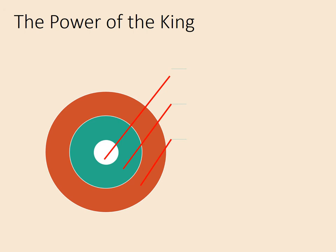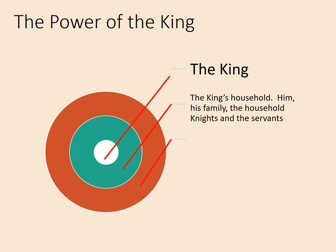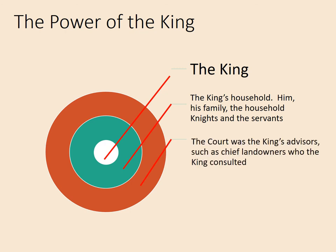The power of the king can be summed up with a diagram of concentric circles showing the influence of power. At the centre we have the king, who has the most power — all other power radiates from him. Then we have the king's household: the king himself, his family, household knights, and servants — the people who knew the king personally best because they lived with him and had the most private access to him. Lastly, we have the court: the king's advisors, such as chief landowners, who are close and loyal followers relied on for advice and sharing some decision making.